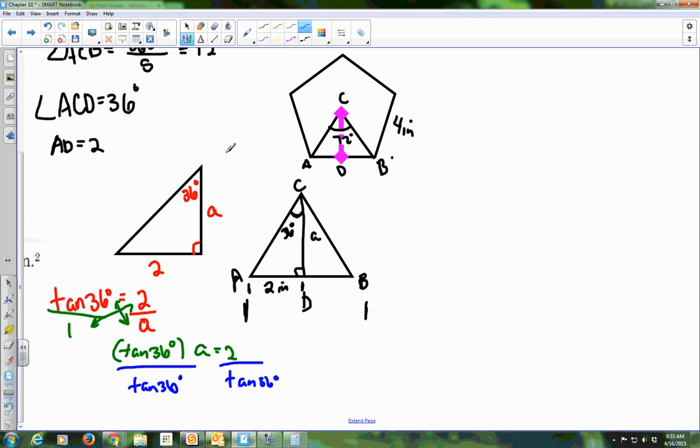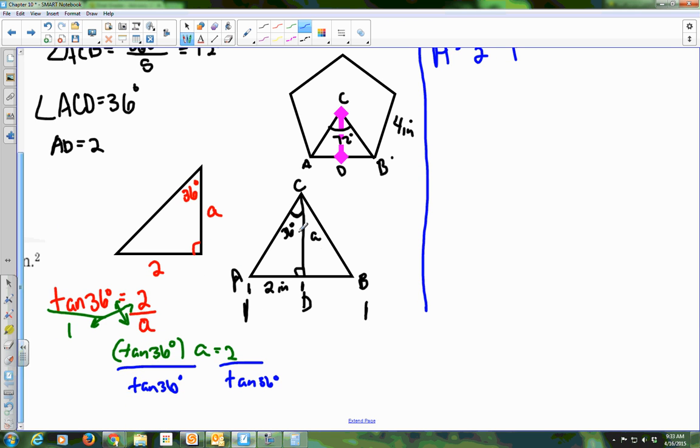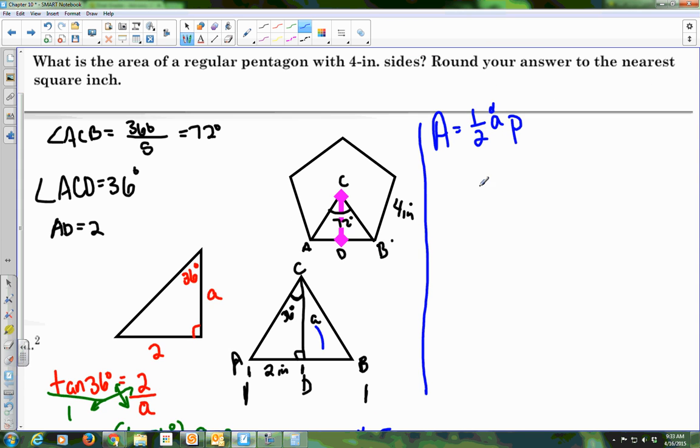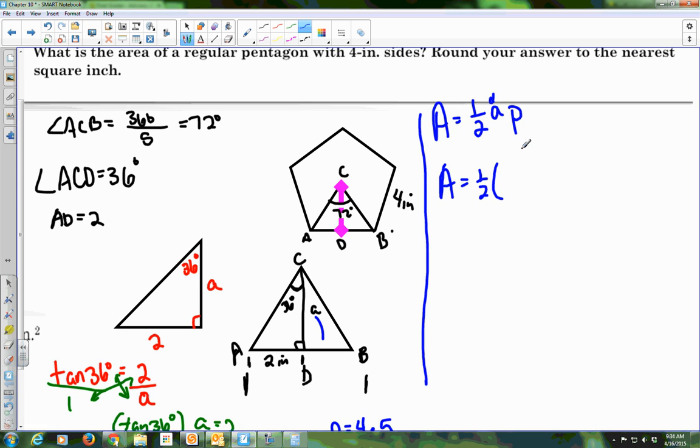So then if I go, the area formula is 1 half the apothem times the perimeter. I have the apothem. We just found that. And now I need the perimeter. So if I'm finding P, it is equal to the side length times the number of sides, which is 5 times 4 is 20. So now my area is equal to 1 half times 2 over the tangent of 36 degrees, times the perimeter, which we found to be 20.